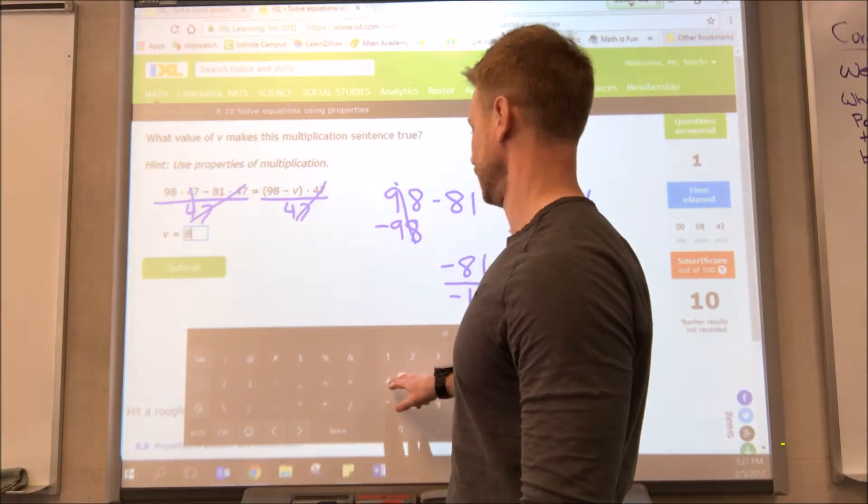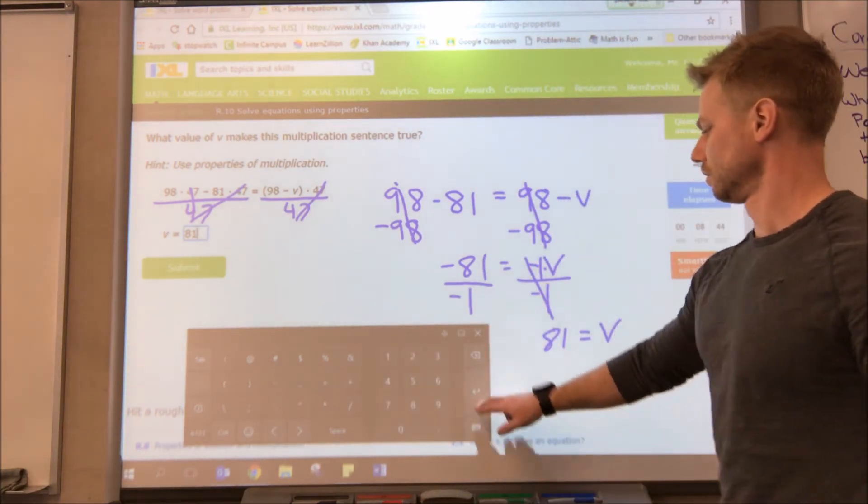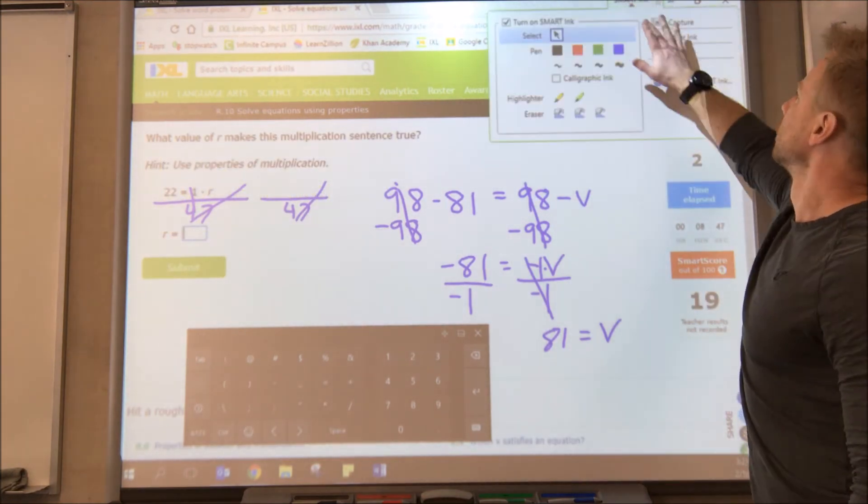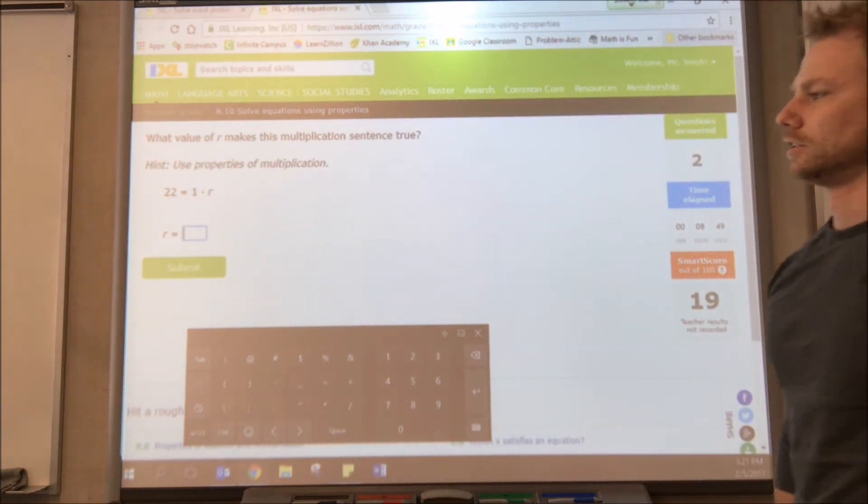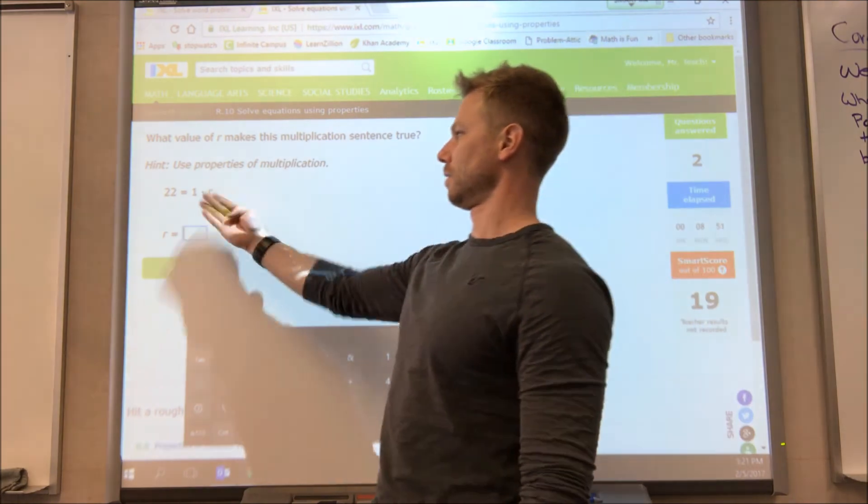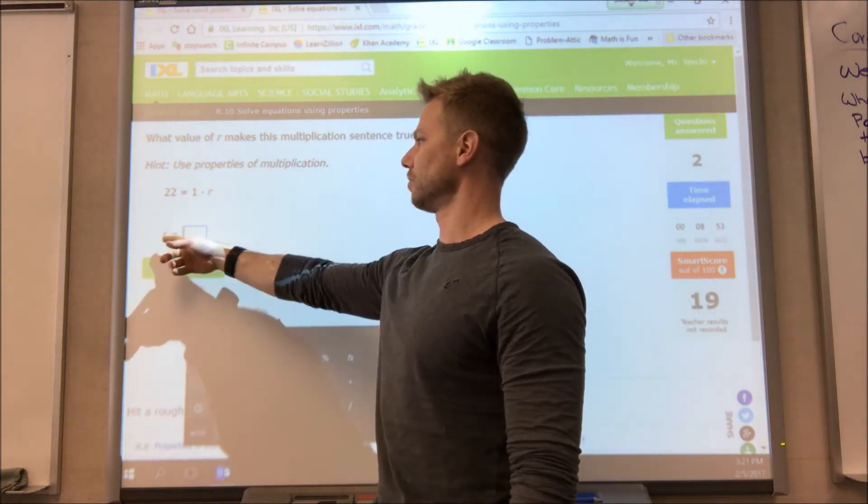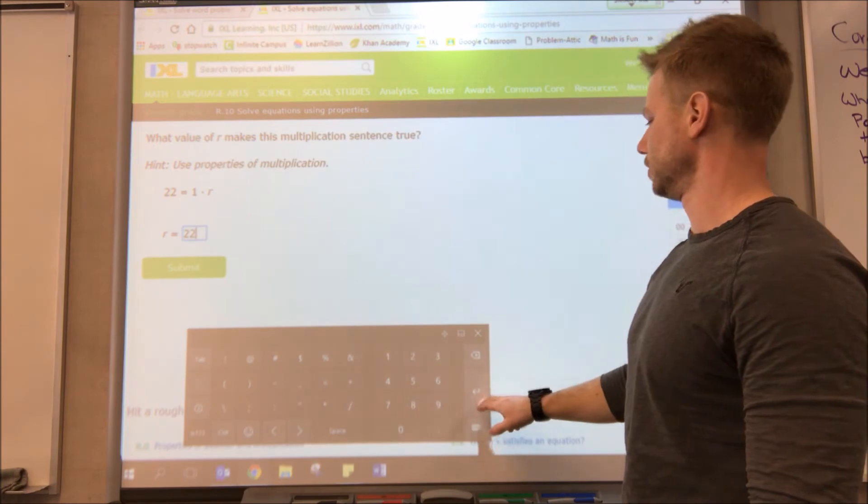Let's plug that in and it's correct. Okay, one more. This is a pretty simple one. 1 times r is just r, so r is going to equal 22.